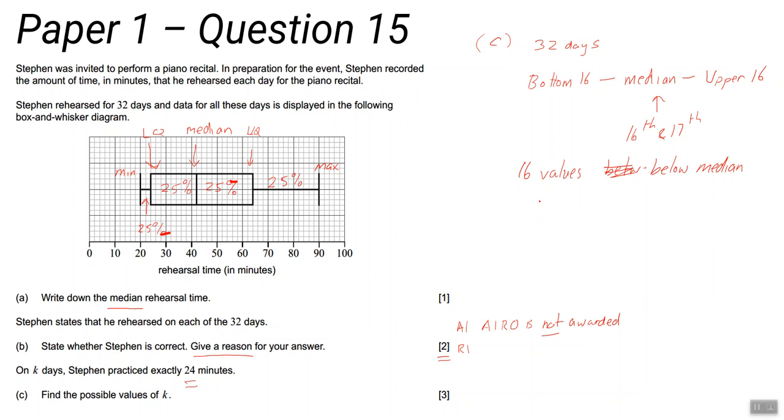So that will give you a clue. So the most it could possibly be at the moment is 16, but we might be able to reduce that. There are 16 below the median. How many of those could be 24? And that's what the graph tells you. Are there any that you know aren't 24?